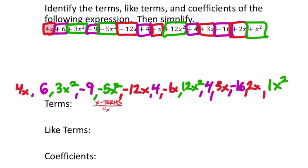Looking for all the x like terms: 4x, then negative 12x, then negative 1x (shown with phantom one), then positive 3x, then positive 2x. I'm listing these vertically — there's a reason for that which we'll get to. Those are all five x terms. Next are the constants: positive 6 is my first constant.